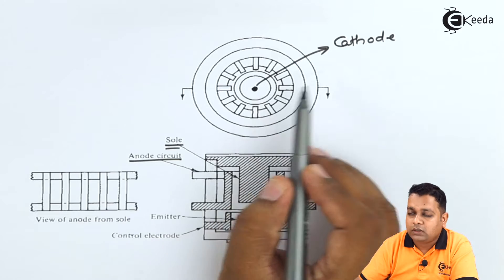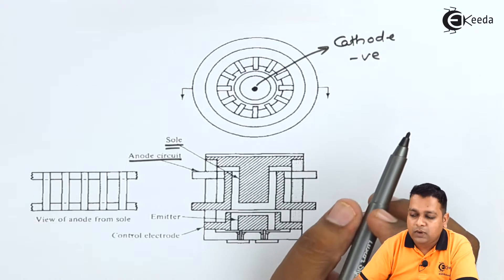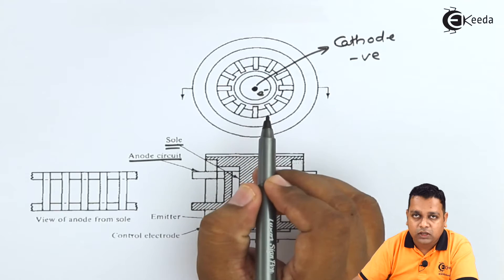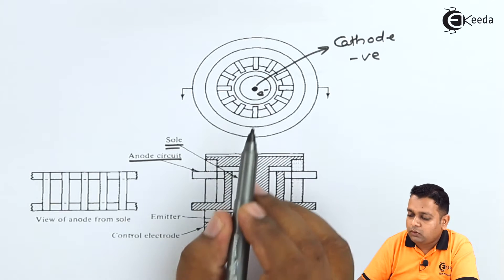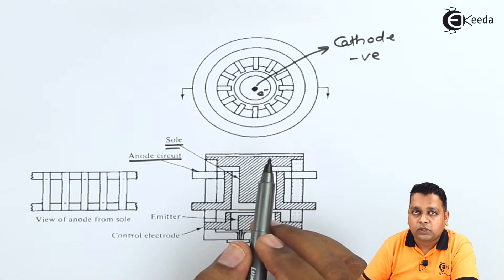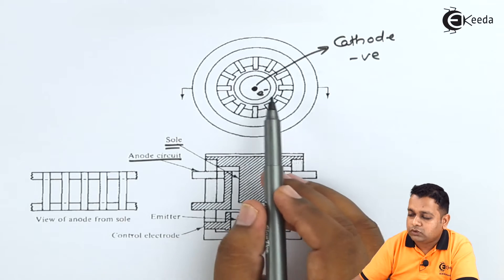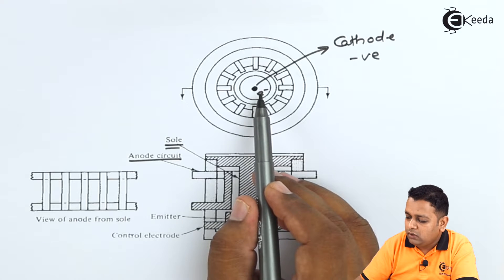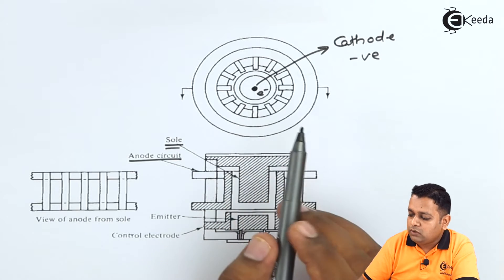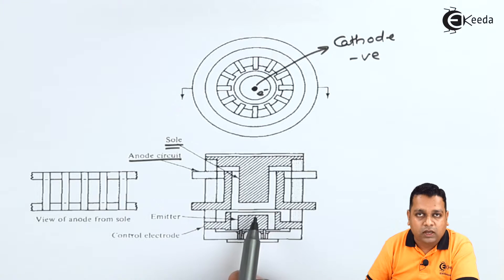Now when the cathode is provided negative potential with the help of heating element it will produce electrons there. So the electron plasma bunches of the electrons, n number of electrons produce continuously. So there they will be produced because of the cathode and there will be first of all sent to the spacing between nearby to that of the cathode.